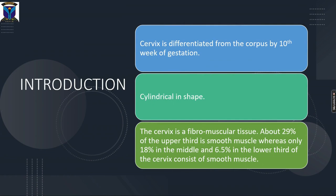The cervix is differentiated from the corpus by the tenth week of gestation. It is cylindrical in shape, and the distribution of muscle within the cervix is such that in the upper part 29% is smooth muscle, while in the lower part only 6.5% is smooth muscle.